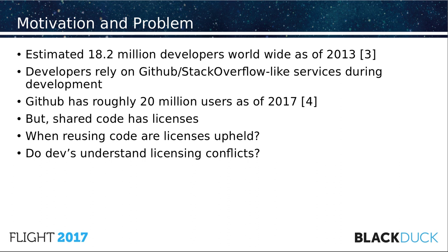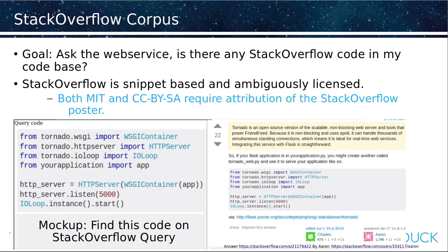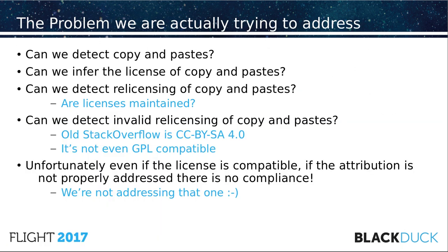We don't really know what's actually going on. We don't know how much code is appearing in Stack Overflow or how much is being taken. So one of our goals is to produce a web service whereby you paste in code and it queries Stack Overflow and says there was similar code here. The code should not necessarily be exact — maybe just a small snippet. So what we really need to do is detect copy and paste, infer the licenses of copy and paste, and detect the re-licensing of copy and paste. Are the licenses maintained?